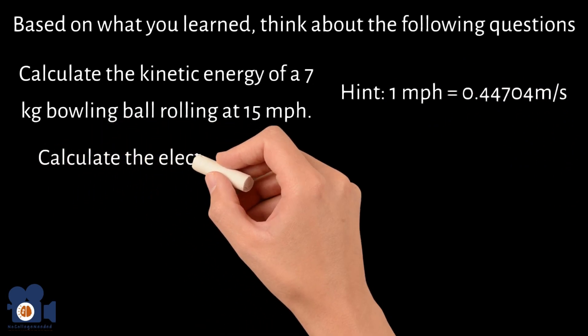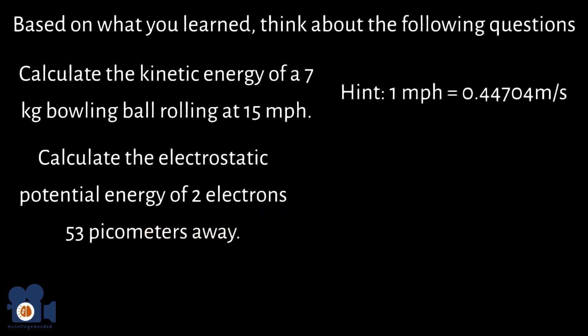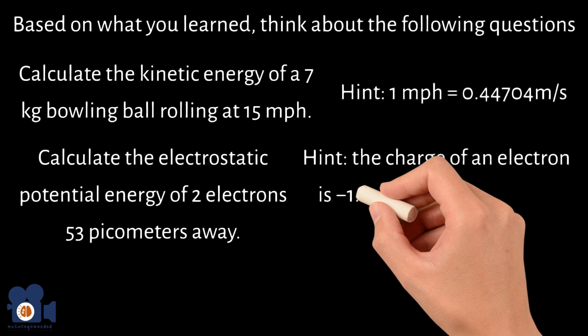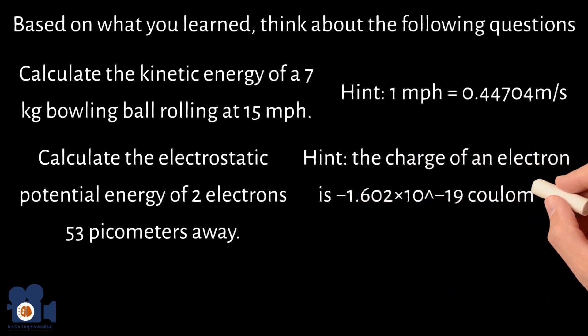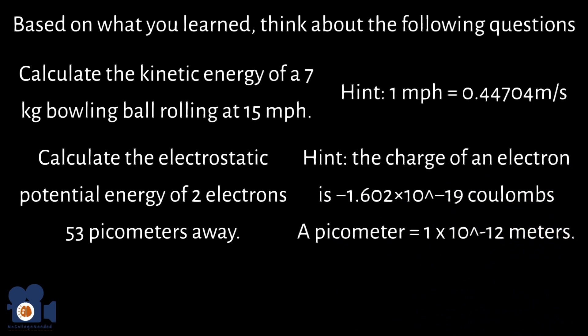And calculate the electrostatic potential energy of two electrons 53 picometers away. Hint: the charge of an electron is negative 1.602 times 10 to the negative 19th coulombs, and a picometer equals 1 times 10 to the negative 12th meters.